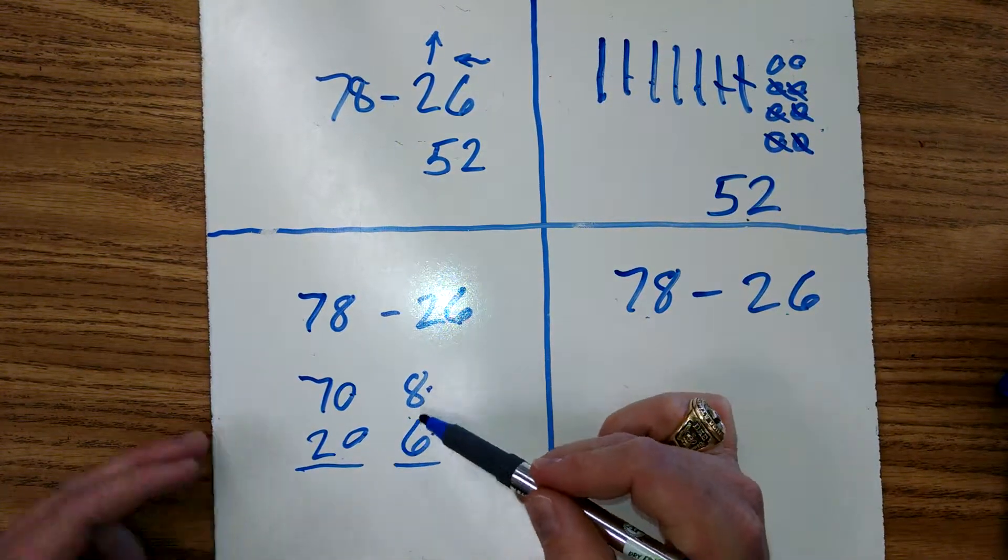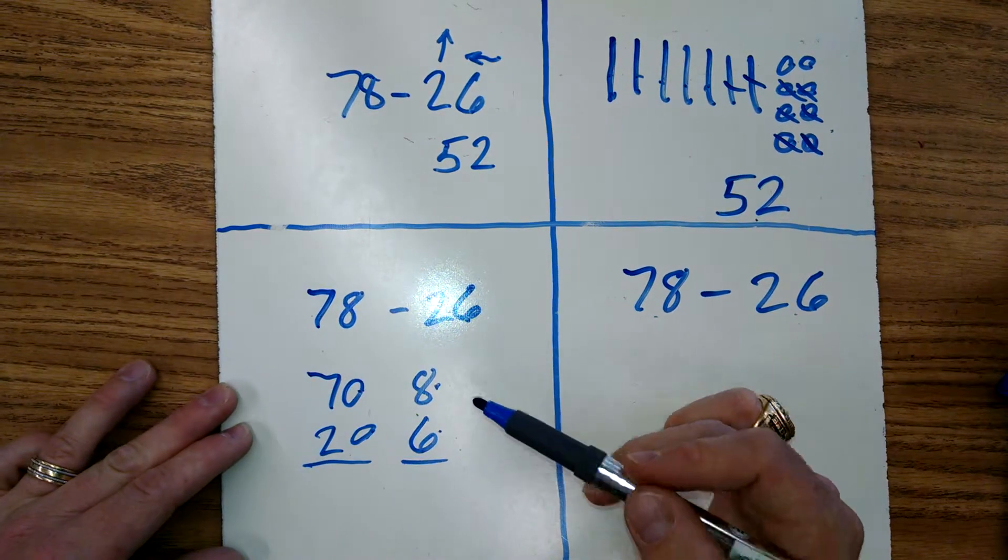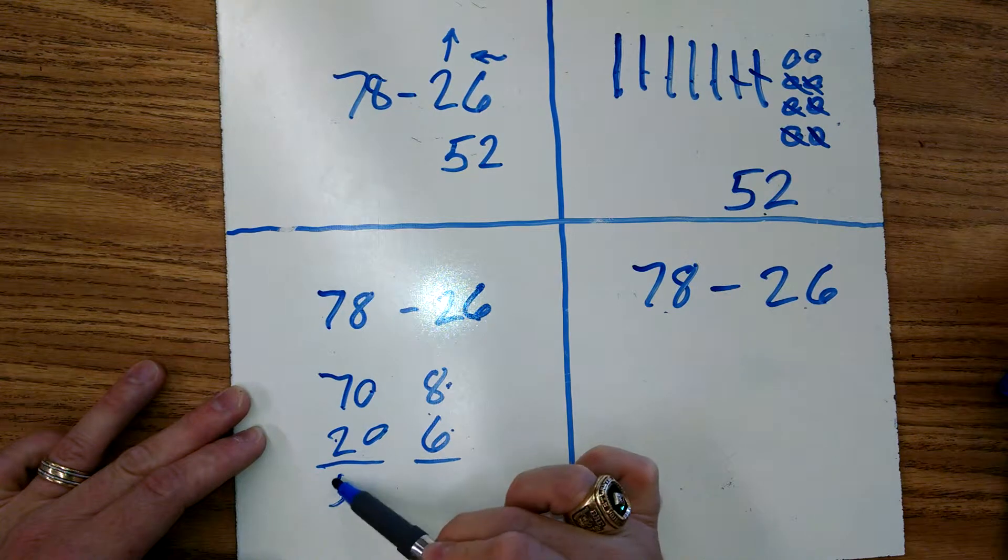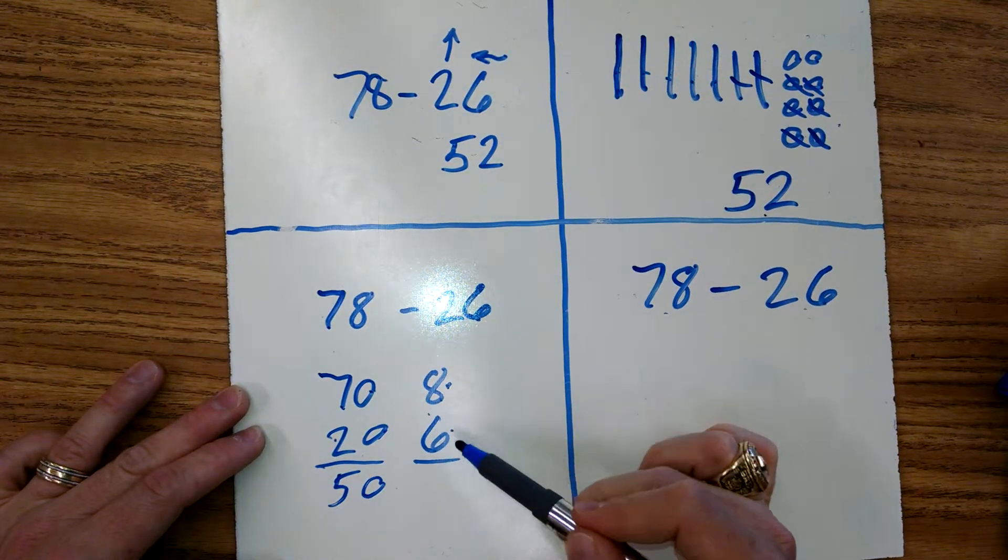Alright? And if we don't have enough, we'll end up having to regroup. And again, we'll get to that in the next video. Seventy minus twenty is fifty. And eight minus six is two.